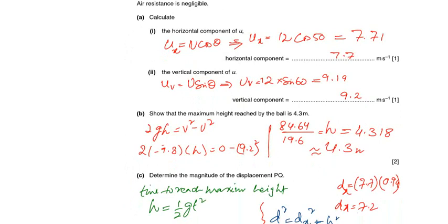Again, the question is very simple: 2gh equals v squared minus u squared.